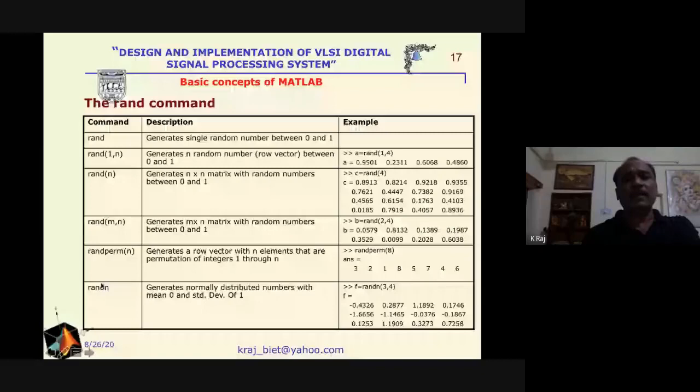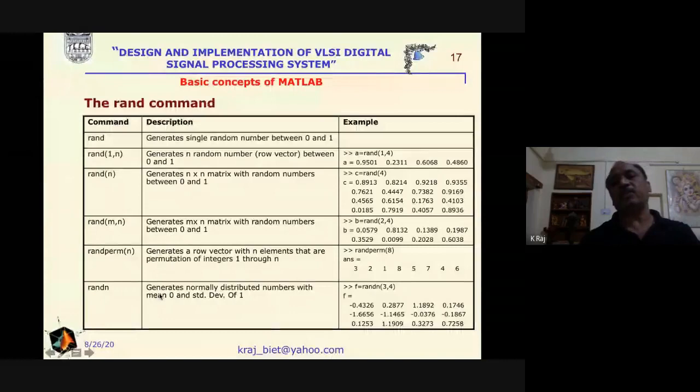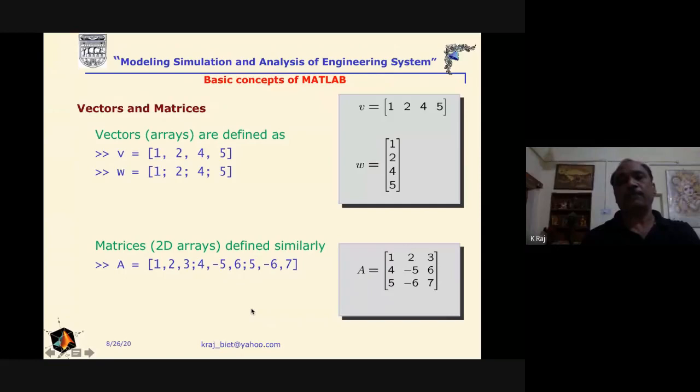The command randn (without parentheses with n) generates normally distributed numbers with mean zero and standard deviation one. Note the difference: rand(n) generates an n×n matrix of uniform random numbers between 0 and 1, while randn generates normally distributed numbers with mean 0 and standard deviation 1.